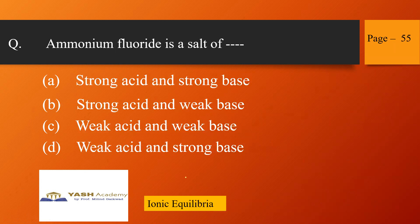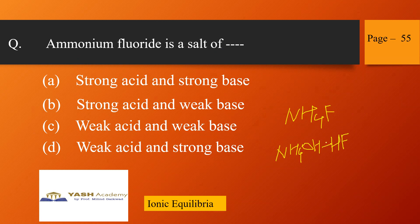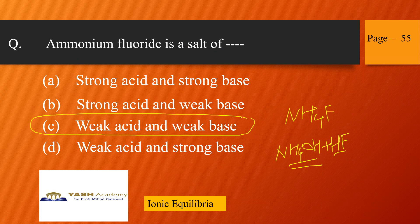Next, from ionic equilibria, page 55 — ammonium fluoride is a salt of: strong acid and strong base, strong acid and weak base, weak acid and weak base, or weak acid and strong base? NH4F is the salt of weak acid HF and weak base NH4OH. So the correct answer is option C: weak acid and weak base.